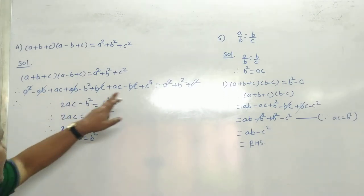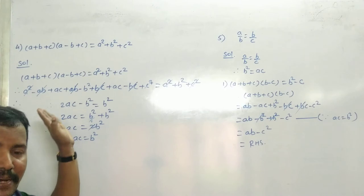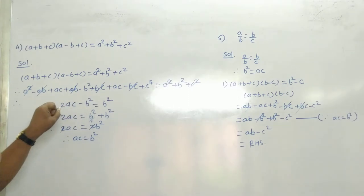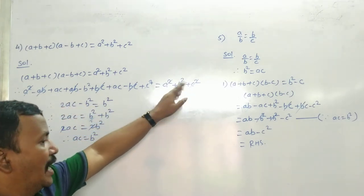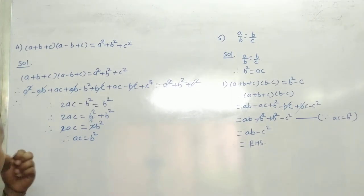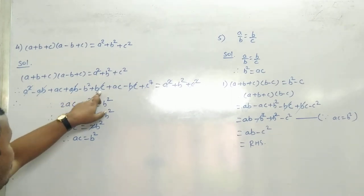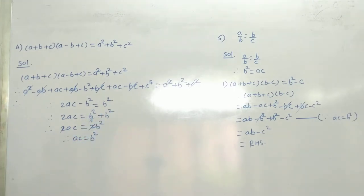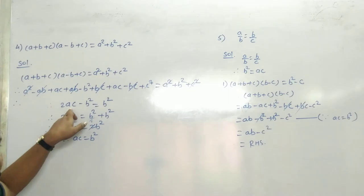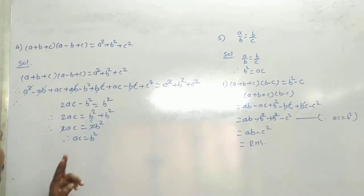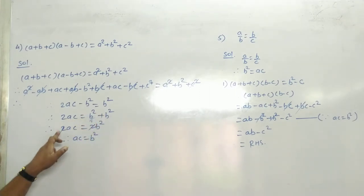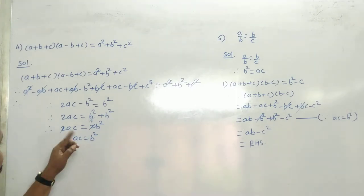Now, A square and A square cut होगा। C square और C square cut होगा। फिर minus AB plus AB cut, plus BC minus BC — दोनों cut हो गए। अब बचा: 2AC minus B square is equal to B square। तो 2AC is equal to B square plus B square, so 2AC is equal to 2 times B square। 2 and 2 cancel.